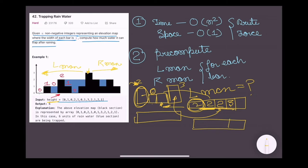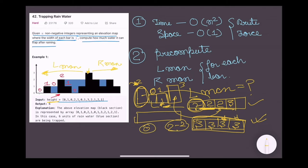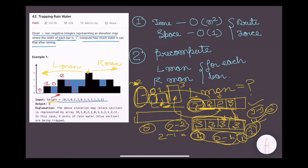For right max, going right to left: initially for the last bar it will be 3, then for each previous bar we compare the current bar with the computed value and store the larger one. Now with left max and right max computed, we can calculate how much water each bar holds. For example, minimum of left max and right max is 2 and current bar height is 2, so water held is 0. For the next index, minimum is 2 and bar height is 1, so water is 1. Accumulating: 0+1+1+0 gives a total of 2.